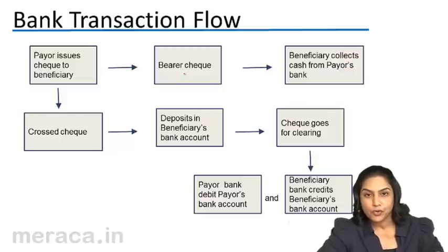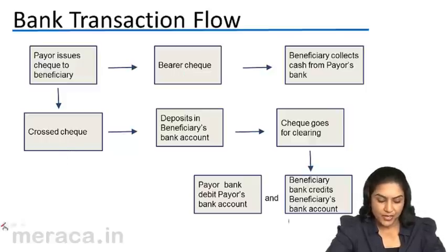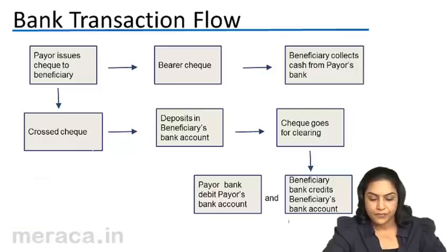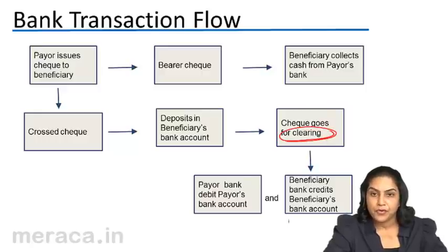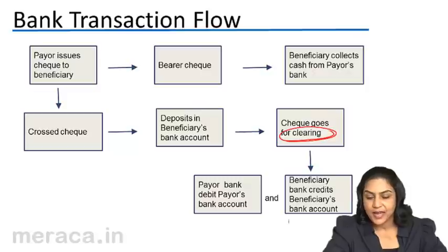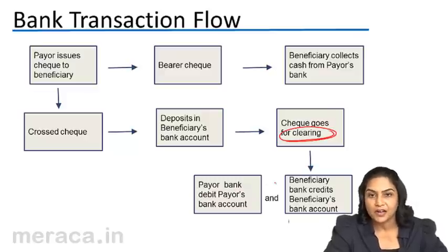Let us understand the flow of this transaction in the bank. In case of a cross cheque, the beneficiary deposits the cheque into his bank account. The bank sends this cheque for a process called clearing. If there are adequate funds in the payer's account and the signature tallies, the cheque is cleared. The bank of the beneficiary credits the beneficiary's account and the bank of the payer debits the payer's account. In effect, funds are transferred from the payer's account to the beneficiary's account.